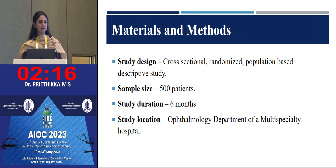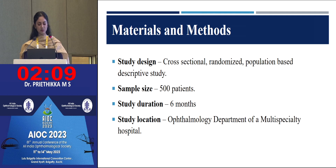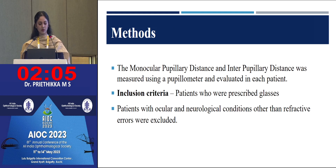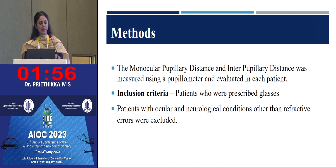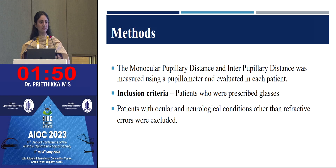The study design was a cross-sectional randomized study with a sample size of 500 patients done over a duration of six months at an ophthalmology department in a multi-specialty hospital. The monocular pupillary distance and the interpupillary distance were measured using a pupillometer and evaluated in each patient. Patients prescribed glasses with refractive errors were included, whereas patients having other ocular or neurological conditions were excluded.